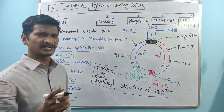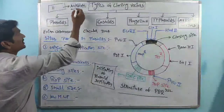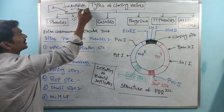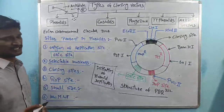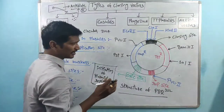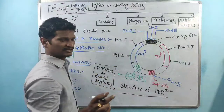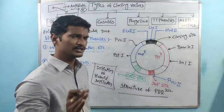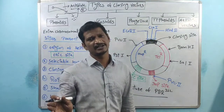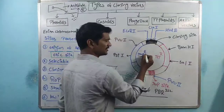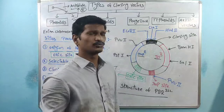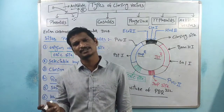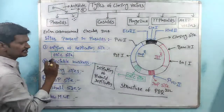The bacteria contains plasmids with antibiotic resistant genes. Those genes produce mRNA, which produces enzymes that are involved in the destruction of antibiotics. These are called selectable markers — the selectable markers in PBR 322 are antibiotic resistant genes: ampicillin resistant gene, tetracycline resistant gene, chloramphenicol resistant gene, kanamycin resistant gene, etc.